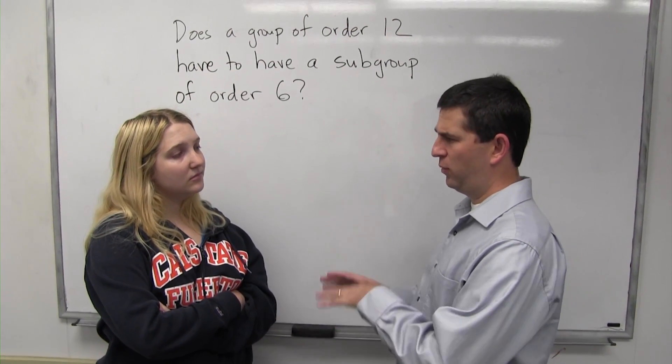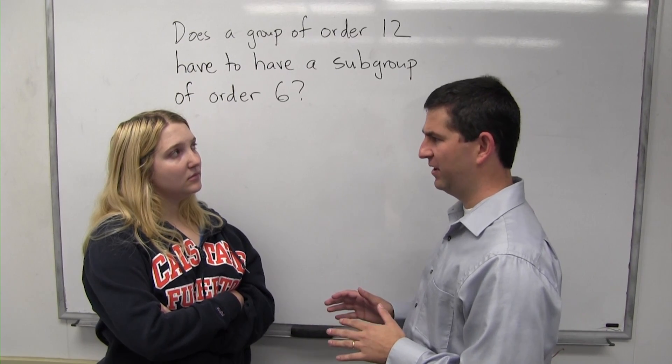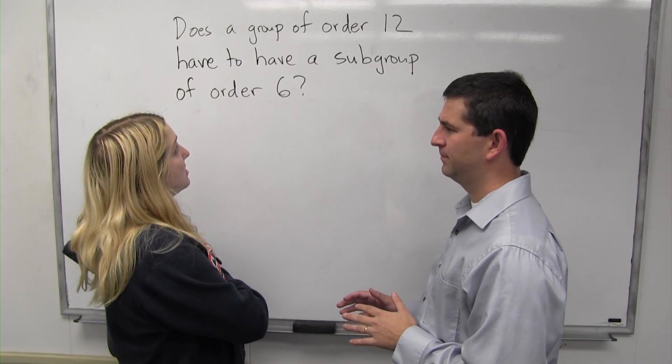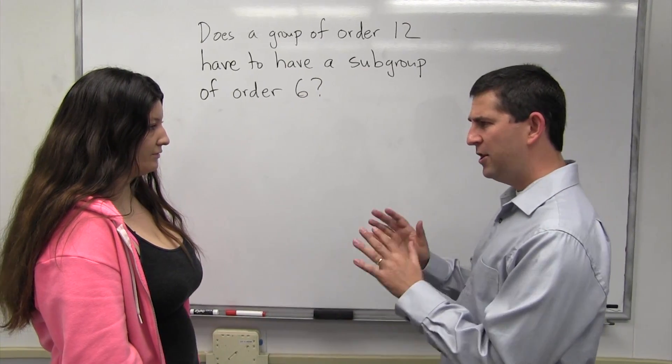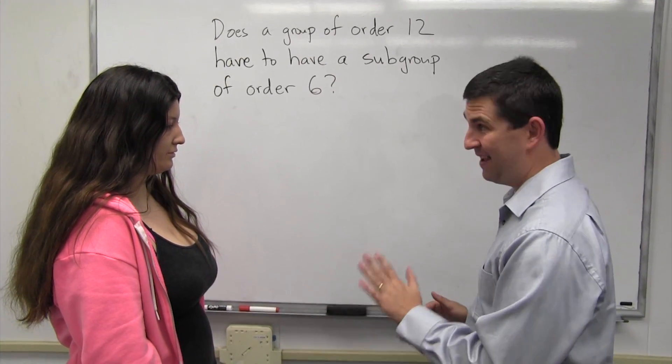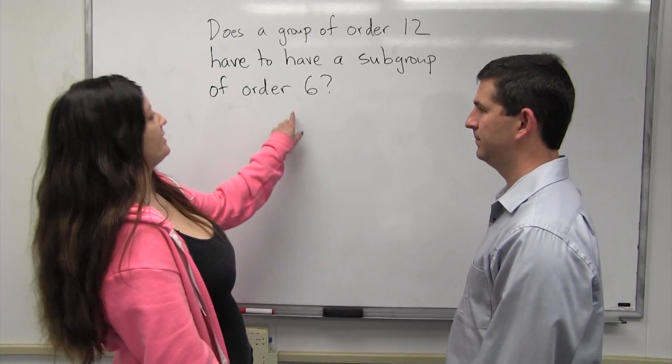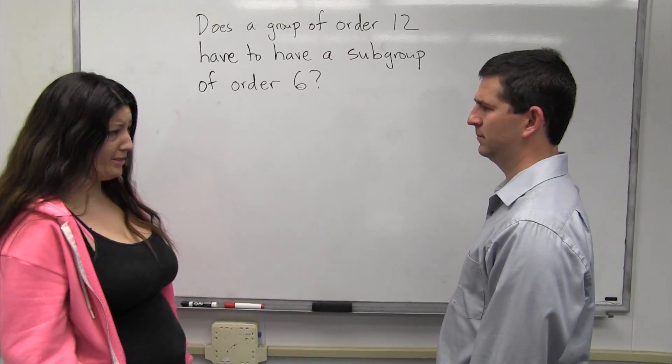So how do you know that a group of order 12 must have a subgroup of order 6? Oh, it's Lagrange's Theorem. Because 6 divides 12, so it's Lagrange's Theorem, right?